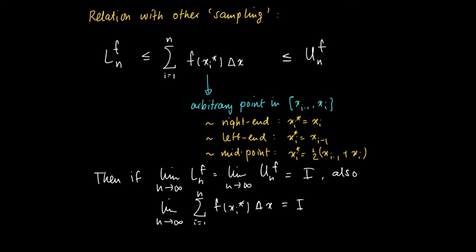In this sense, it doesn't matter, when we know that this limit exists, what kind of sampling method we use, since these all give rise to the same number, which is the definite integral over a, b of f(x) dx.